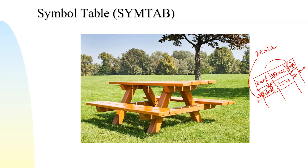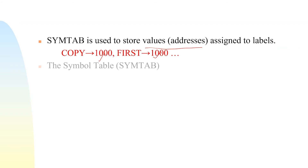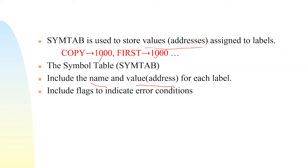The symbol table is used to store the address assigned to labels. For example, if there is a label COPY, it is assigned address 1000. The symbol table includes the name and address of each label, and includes flags to indicate error conditions. It may also contain type and length — for example, if a label references a WORD the length is 3, and if it references a BYTE the length is 1.